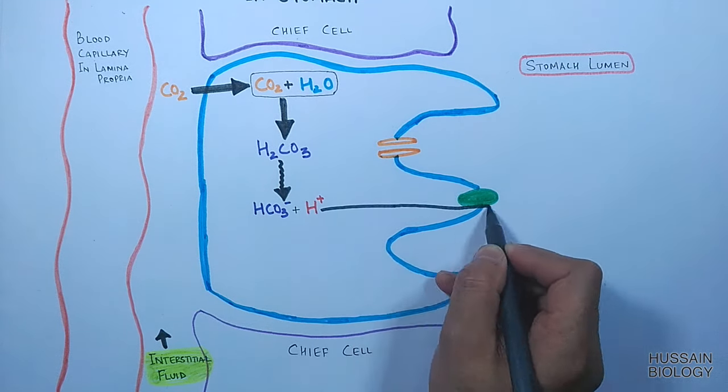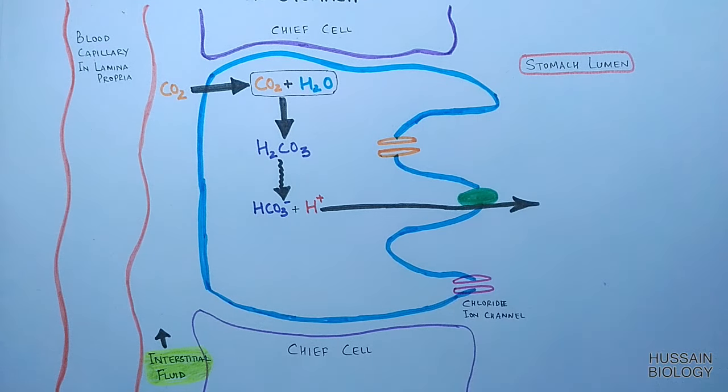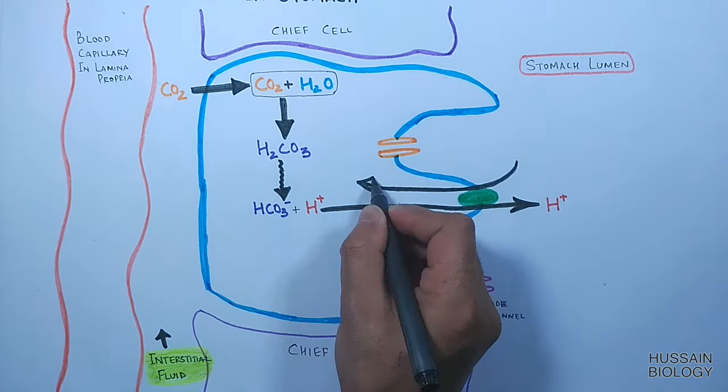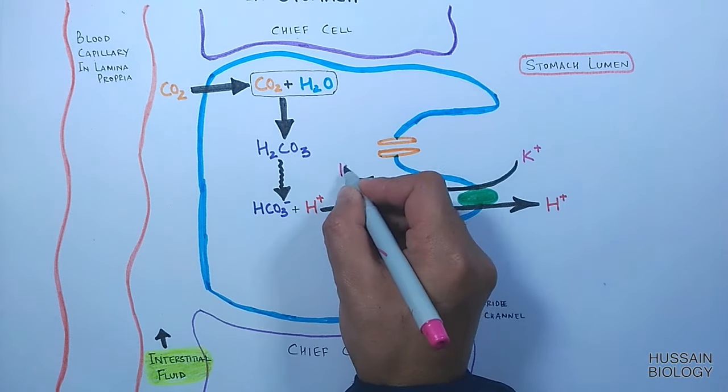The proton in the parietal cell is pumped out by the proton pump into the stomach lumen, and this process consumes ATP. Meanwhile, while the proton is being pumped out, potassium ions are pumped into the parietal cell through the same pump.